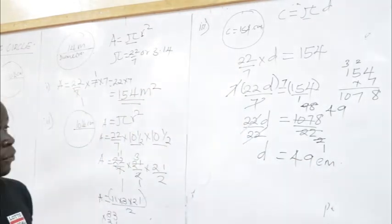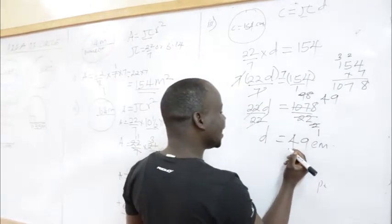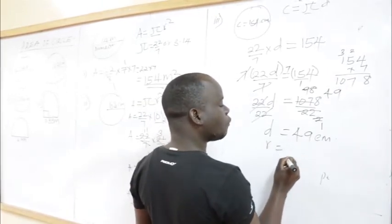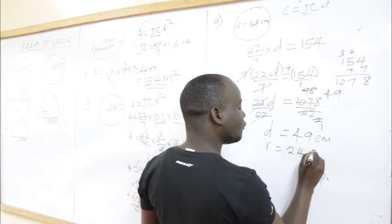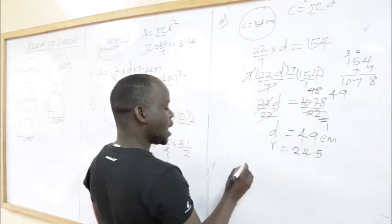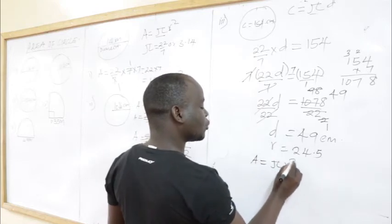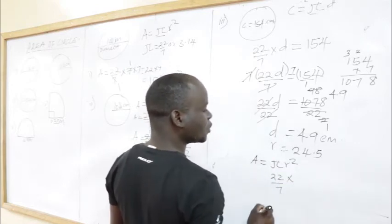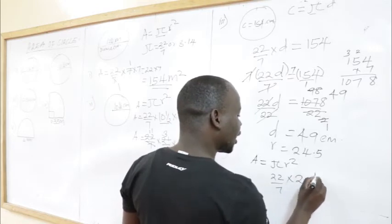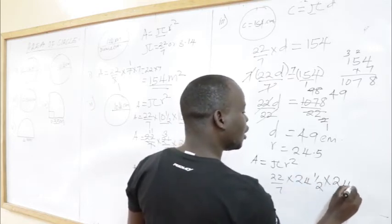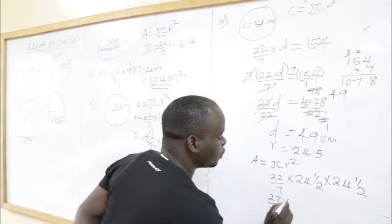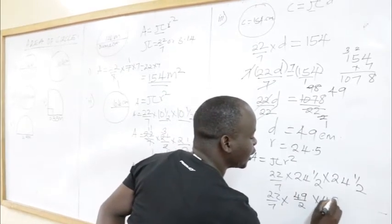Since D is the diameter, the radius will be half of 49, which is 24.5 centimeters. Now we find the area: Area = π r² = 22/7 × 24.5 × 24.5. Converting 24.5 to an improper fraction gives 49/2. So: Area = 22/7 × 49/2 × 49/2.